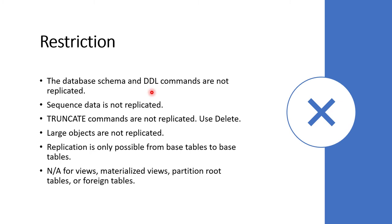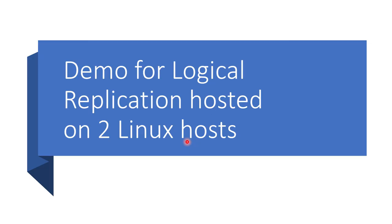Sequence data is not replicated from publisher to subscriber. If you run the TRUNCATE command, it is not actually replicated to the subscriber — instead you can use the DELETE command if possible. Large object replication is not allowed or possible, though maybe in future versions it will be. Replication is only possible from base table to base table — views, materialized views, partition root tables, and foreign tables are not supported.